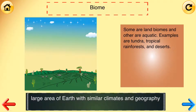Biome. Large area of earth with similar climates and geography. Some are land biomes and others are aquatic. Examples are tundra, tropical rainforests, and deserts.